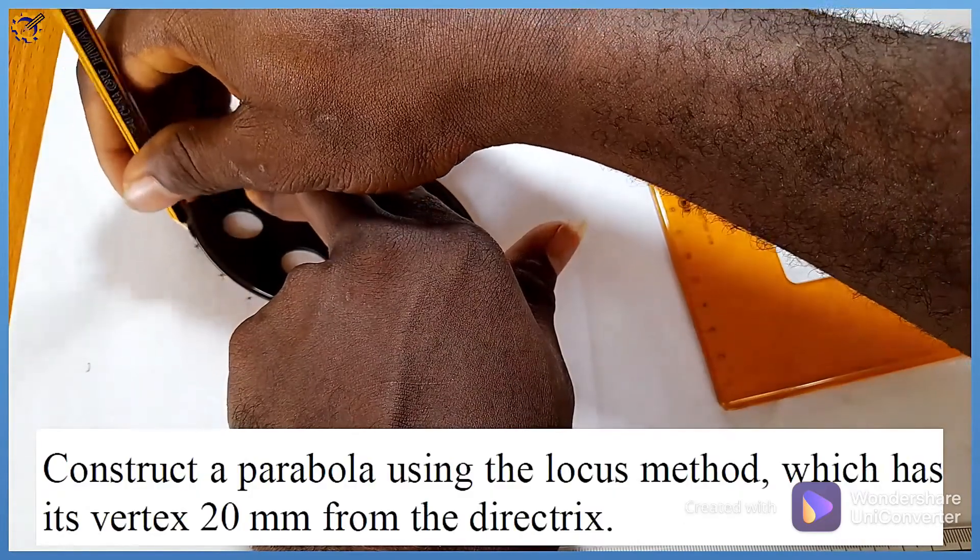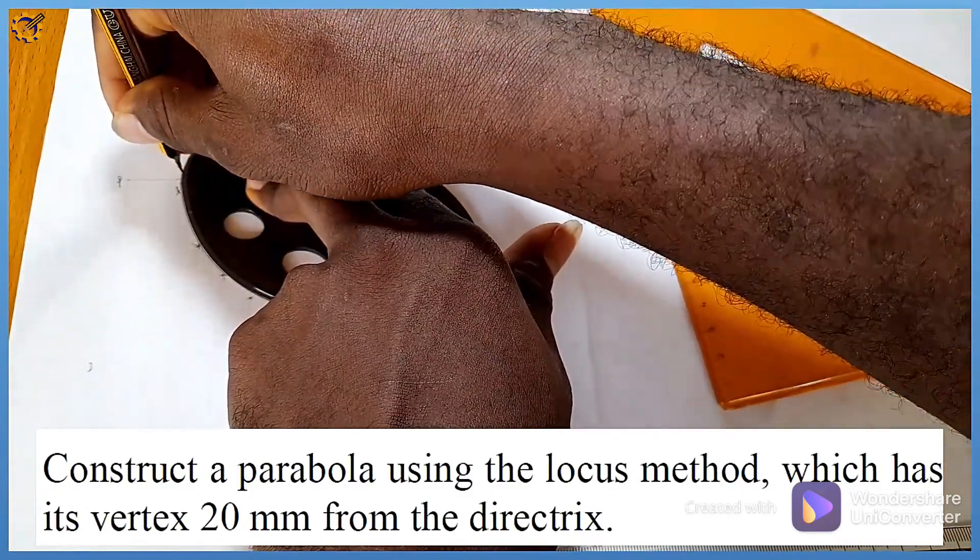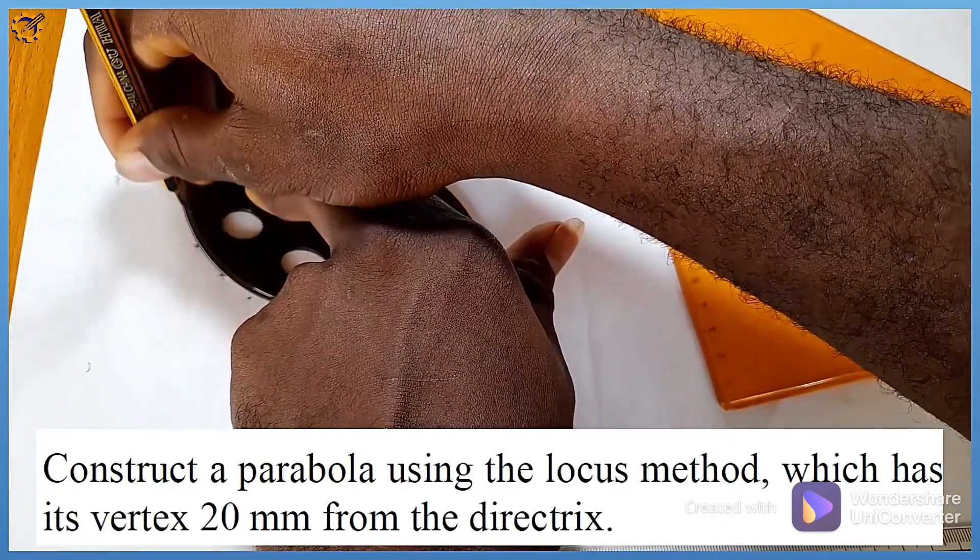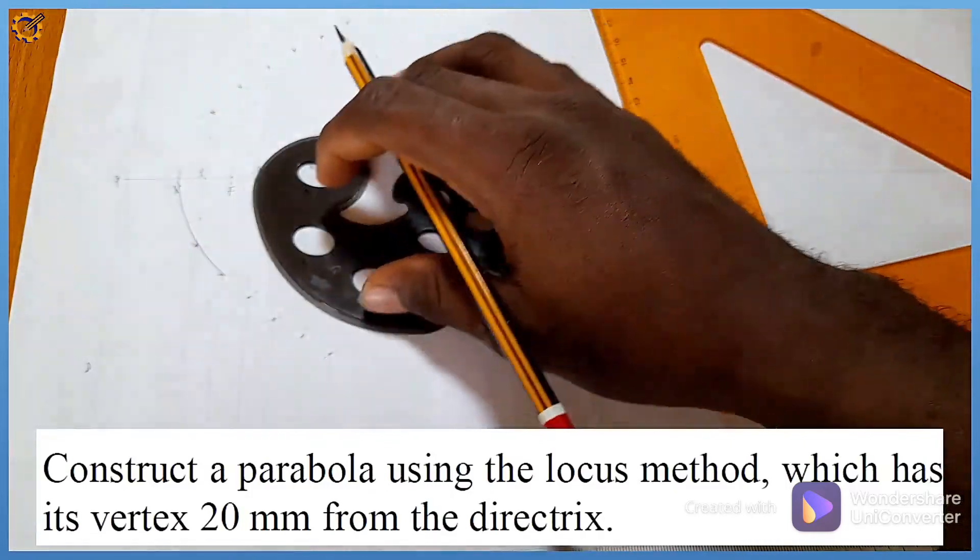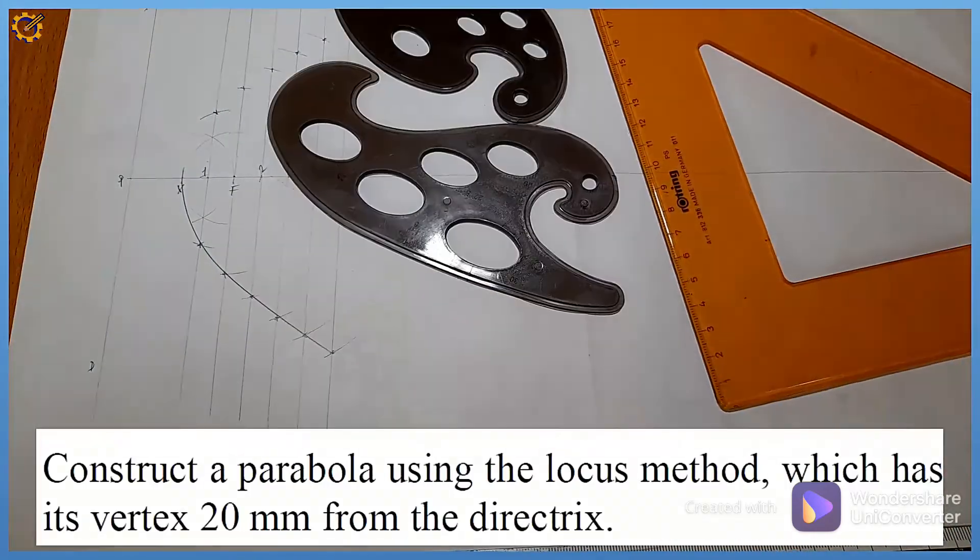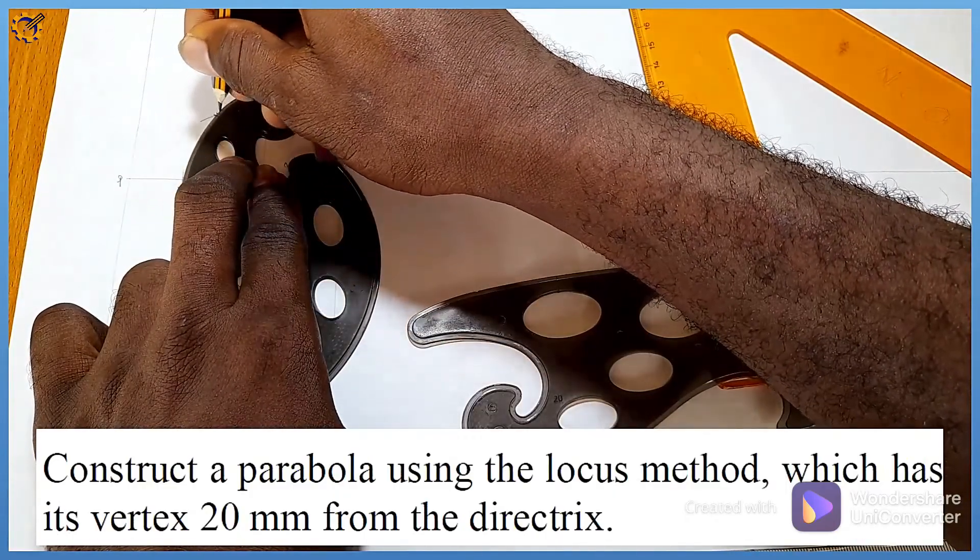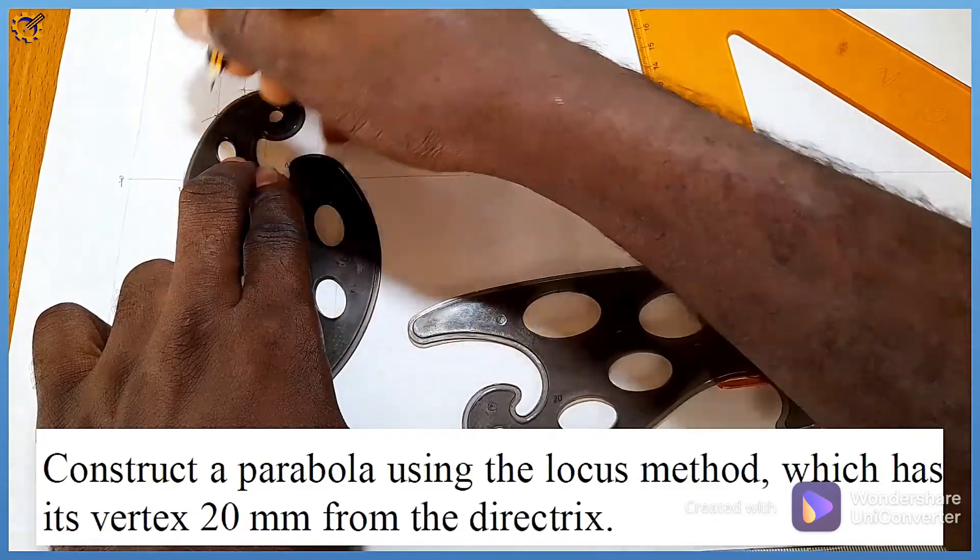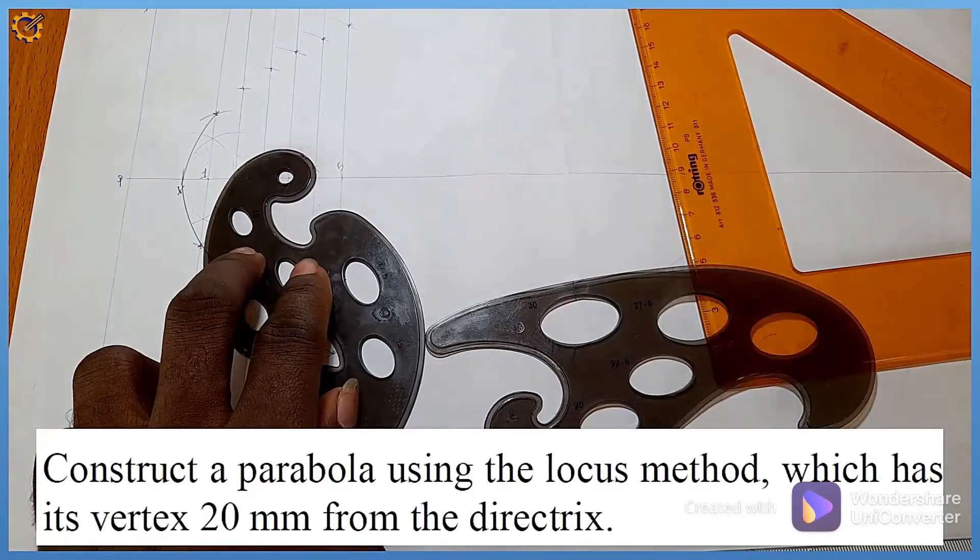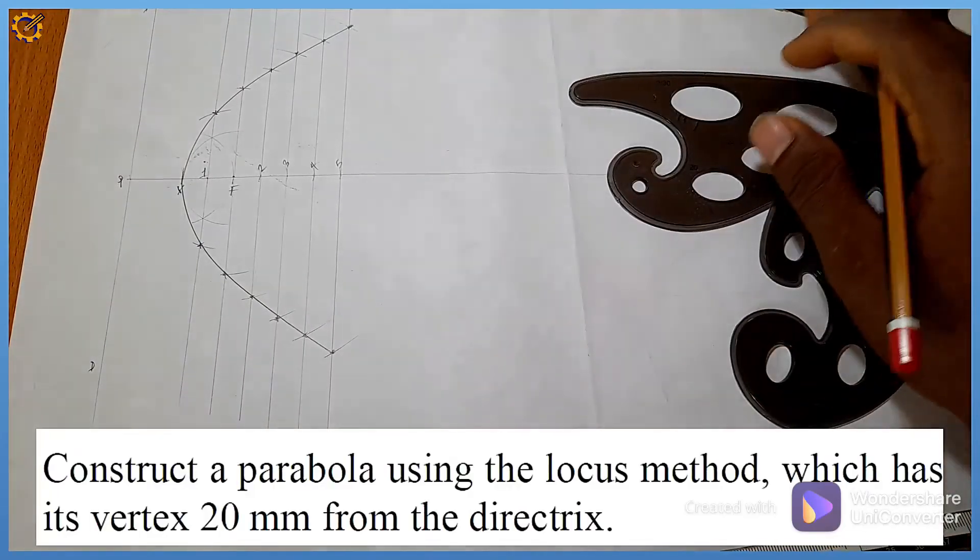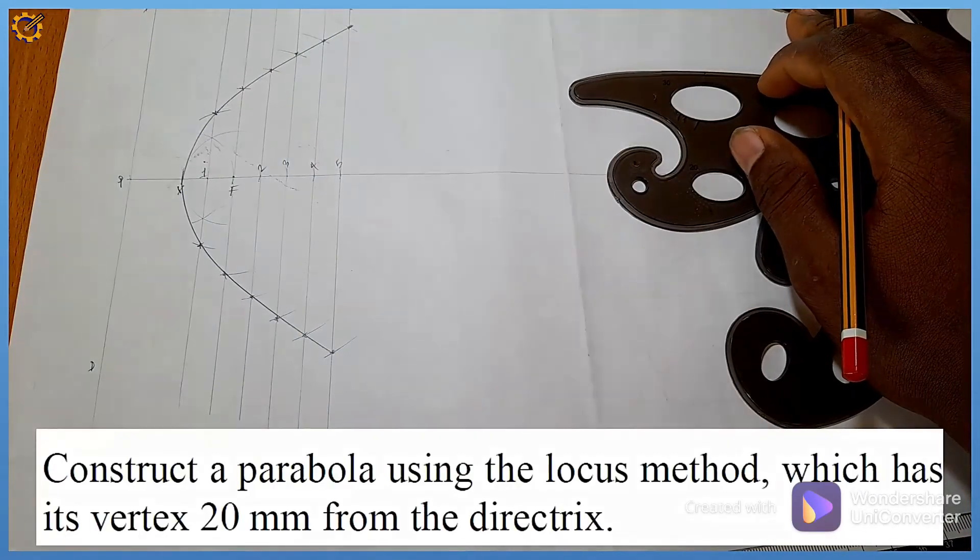This junction I draw it this way, as you can see on the screen. I join this like this, I join this right here. That is it, I've joined each of the points together with my French curve.